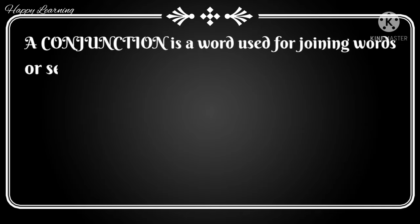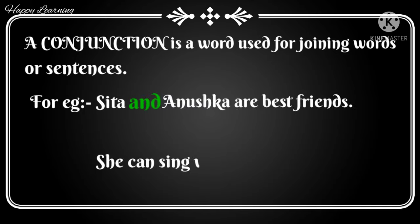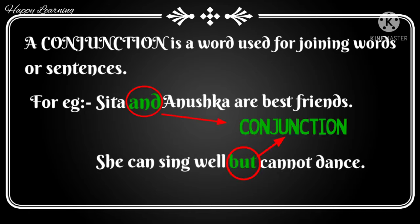Next comes the conjunction. A conjunction is a word used for joining words or sentences. For example: 'Sita and Anushka are best friends' and 'She can sing well but cannot dance.' The words in green — 'and' and 'but' — are the conjunctions, joining two words in the first example and two clauses in the second.